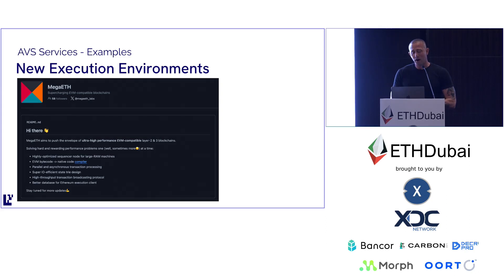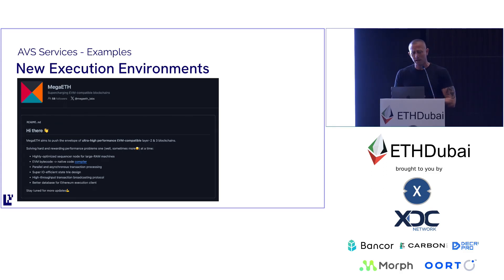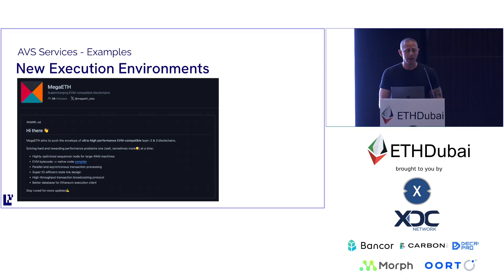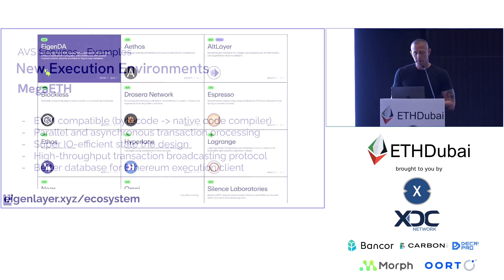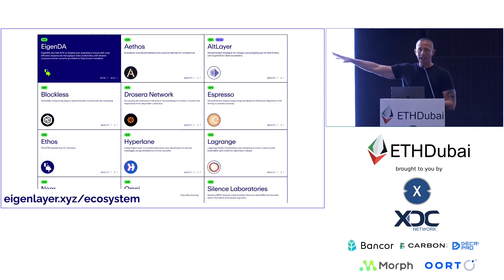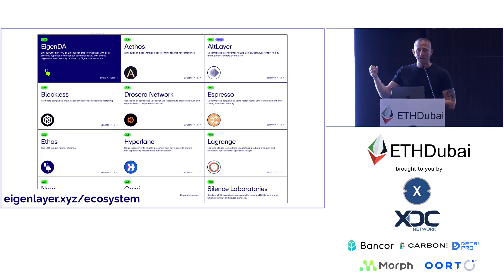Many rollup-as-a-service providers support EigenDA as well as different AVS pieces of the stack, like Caldera, Conduit, and Gelato. There are also new execution environments being built that will leverage EigenDA — MegaEth is one, rebuilding everything from scratch with parallel execution and other parts of the EVM, meant to be not only bytecode compatible but bytecode equivalent. You can almost compare them to an Ethereum-aligned Monad aiming for 10k TPS with very low transaction costs. You can explore more AVSs at eigenlayer.xyz/ecosystem. They went to mainnet last week with more AVSs to be announced.